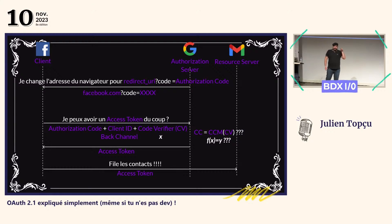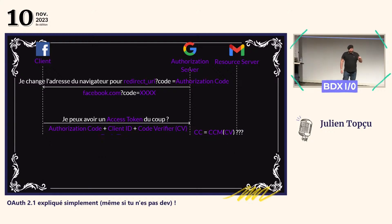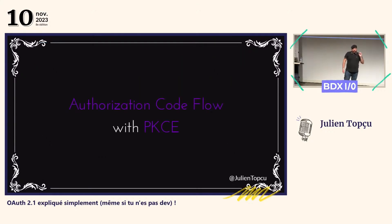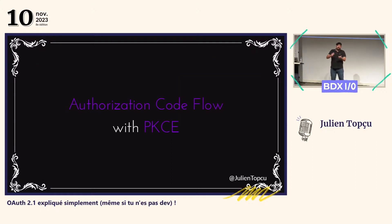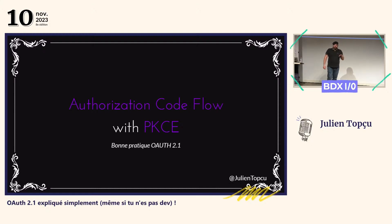Ce flow-là, c'est le nouveau flow qui fait partie d'OAuth 2.1 : l'Authorization Code with PKCE (Pixie), qui remplace l'Implicit Flow et l'Authorization Code Flow qui existait jusqu'alors. C'est la nouvelle bonne pratique d'OAuth 2.1. On ne devrait plus utiliser les deux autres.